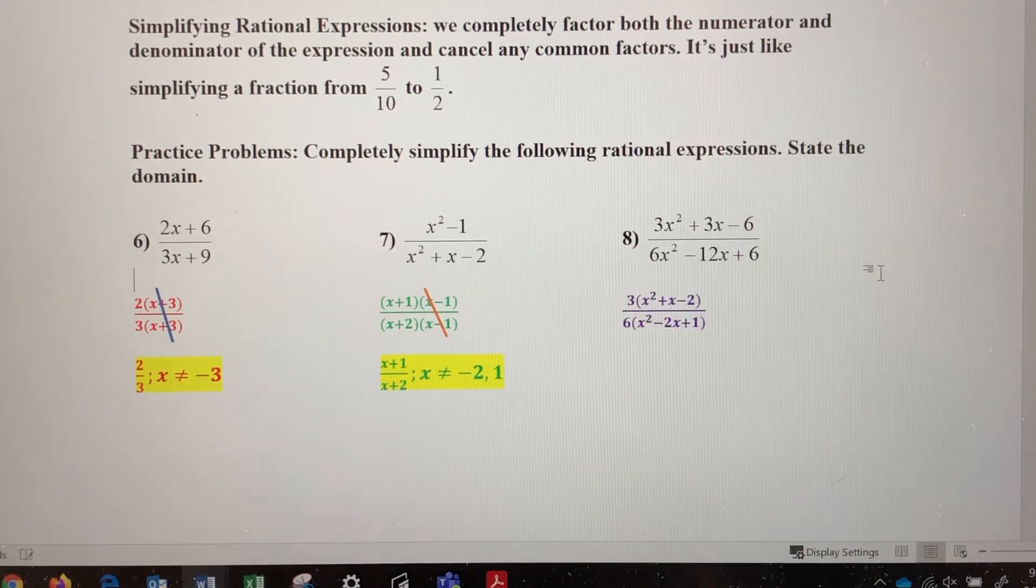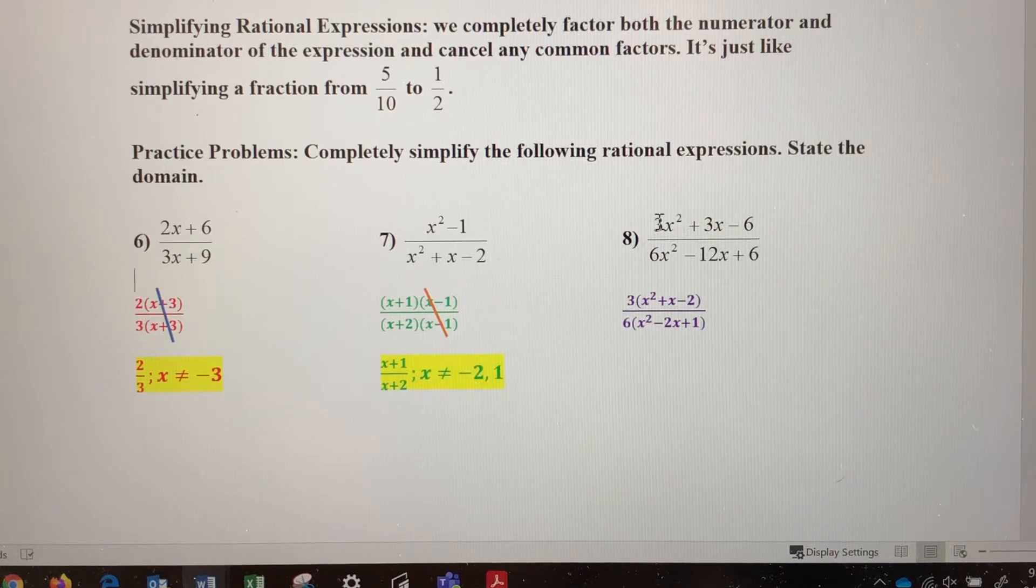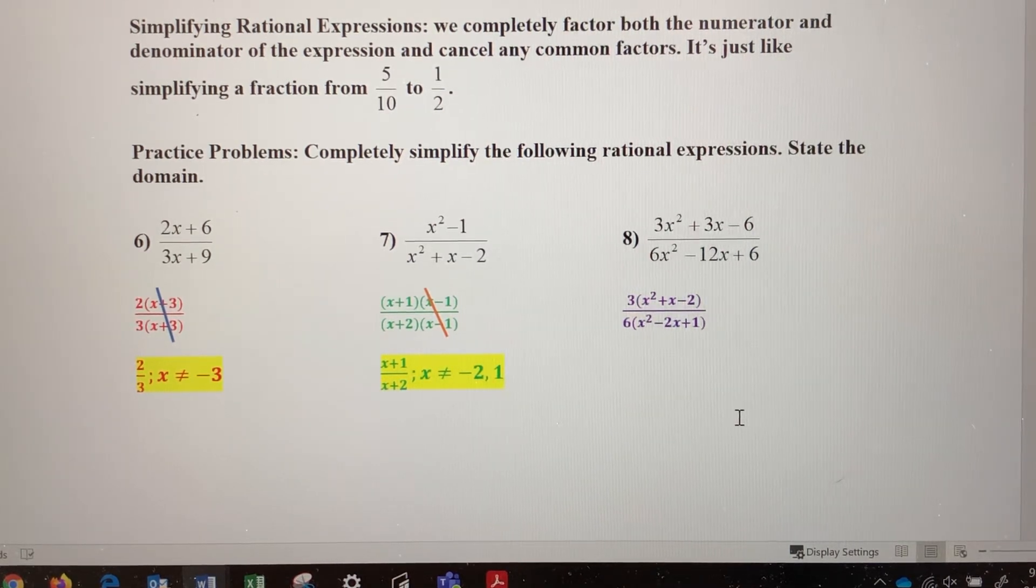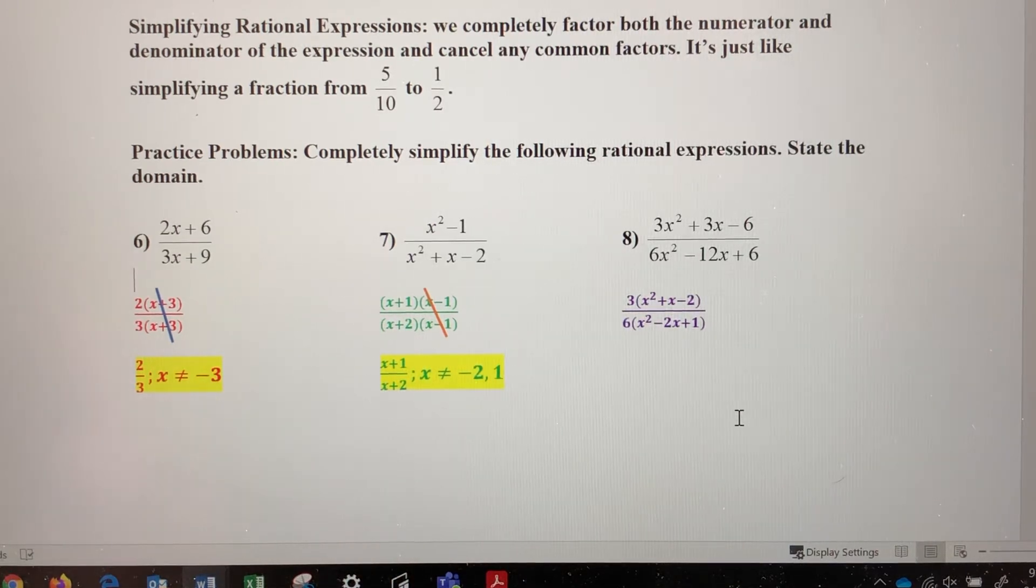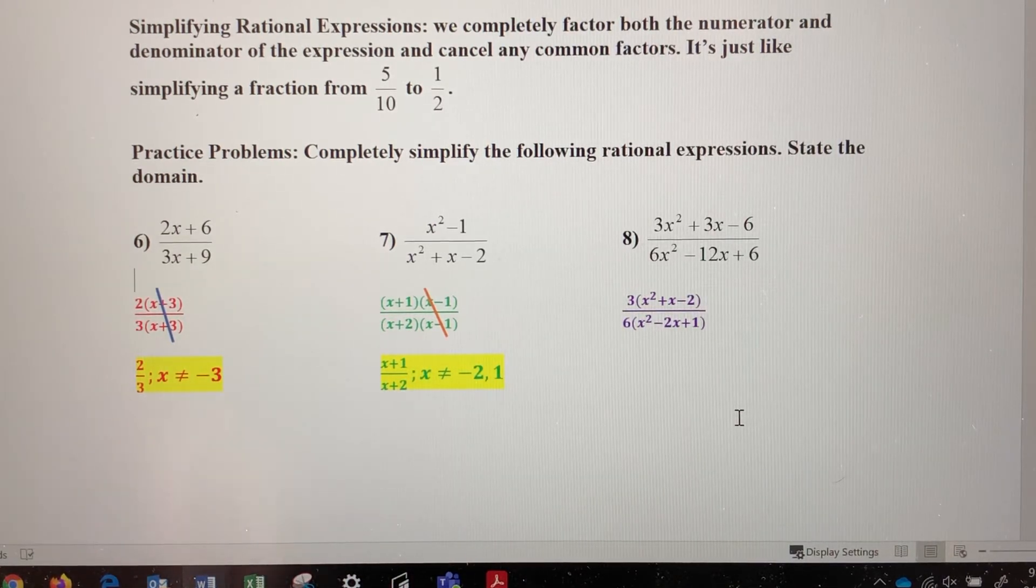When I factor the numerator and denominator, I can take out a GCF of 3 in the numerator. I can take out a GCF of 6 in the denominator. And in parentheses, I have two trinomials here. Both look like they can be factored, so I have to factor one more step in each of the numerator and the denominator.